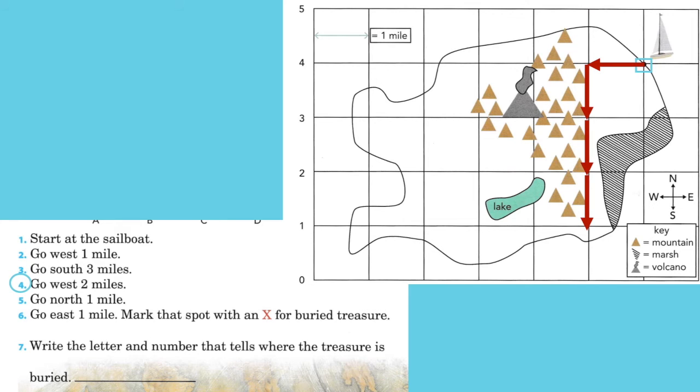Number four. Go west two miles. Now west is to the left. One, two. Number five. Go north one mile. North is going to be up. Good.